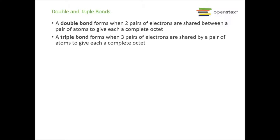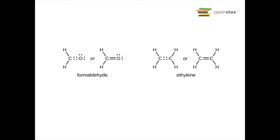Double and triple bonds do exist. A double bond forms when two pairs of electrons are shared between two atoms to give a complete octet, and a triple bond forms when three pairs of electrons are shared. For example, formaldehyde has a double bond between carbon and oxygen. Ethylene has a double bond between the two carbons. Looking at each carbon in ethylene you can count eight electrons, and in formaldehyde both the oxygen and the carbon each have a complete octet of eight electrons.